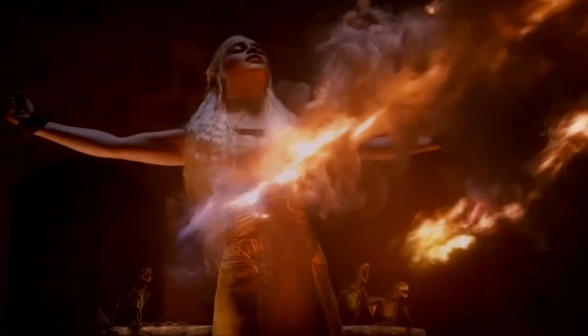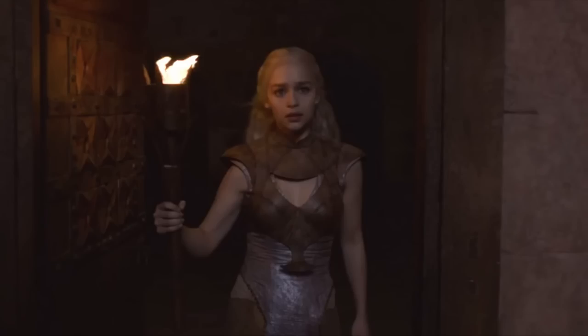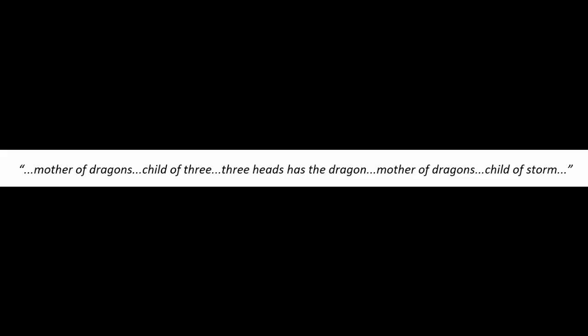This is when Dany actually reaches the Undying. They really hammer home the number three here — they give her three visions with three things within each vision. Right before that, as she walks in, she hears whispers and they start labeling her all the things we've heard her called: mother of dragons, child of three, three heads has the dragon, mother of dragons, child of storm.